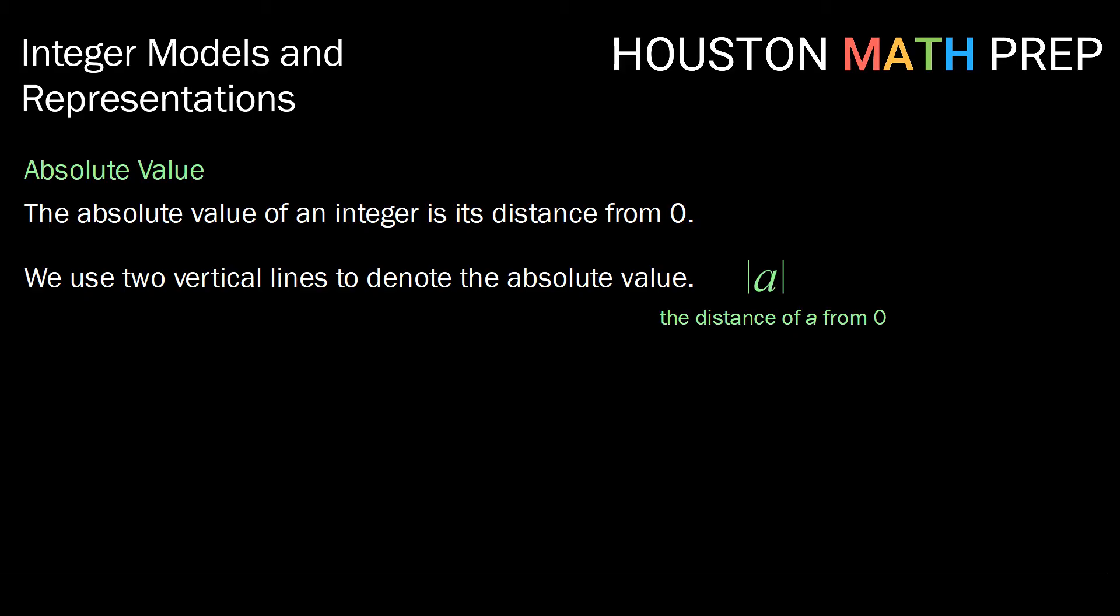We use two vertical lines around an integer as shown here to denote absolute value. So when we see this notation, we know that that means the distance of a, which can be any integer, from zero.